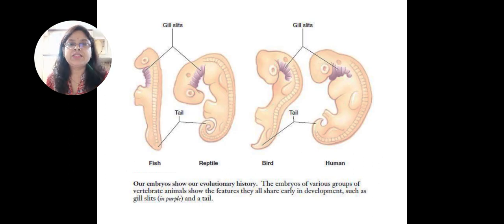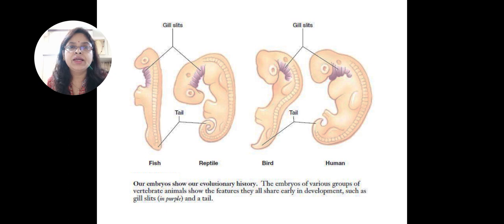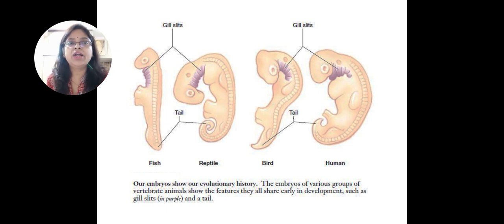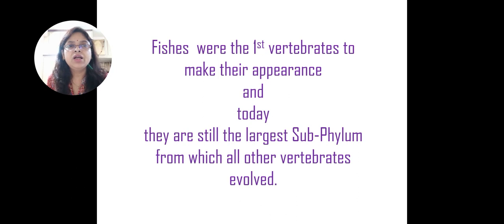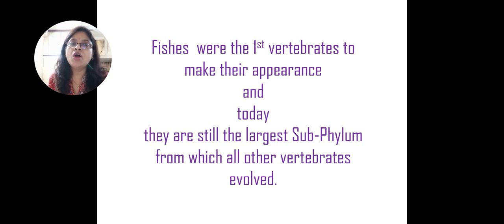You can see here the gill slits in the embryos. These embryos show evolutionary history. In purple color, the first is fish, the second is reptile with gill slits in purple, the third is birds where gill slits are also seen, and humans where gill slits are also seen. This is the development of gill slits in embryonic conditions. Fishes were the first vertebrates to appear and today they are still the largest subphylum from which all other vertebrates evolved.